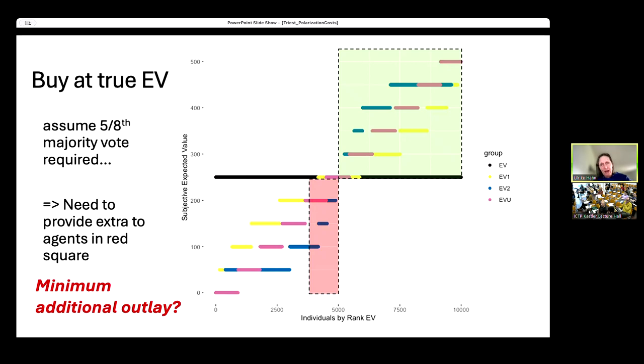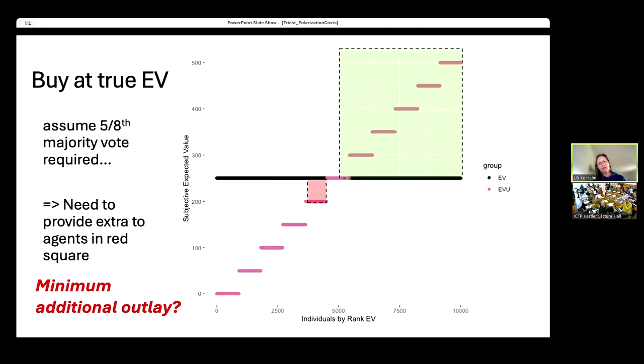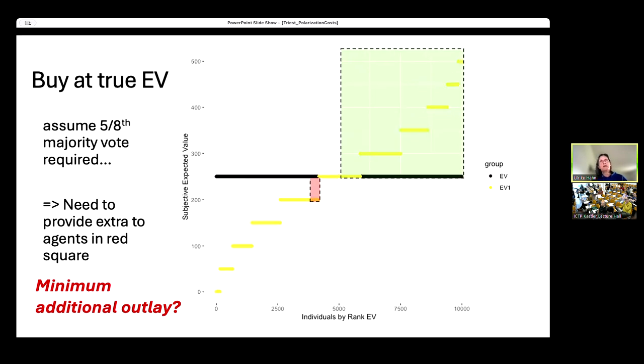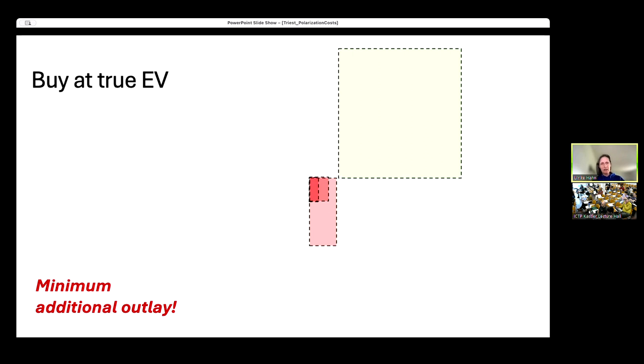Just going to call that extra bit the minimum additional outlay. This is what we have to fork out for the uniform distribution. This is what we have to add for the normal distribution. And this is what we have to add as a minimum additional outlay to get people on board for the bimodal distribution. We can see immediately that this minimum additional outlay is going to be largest for the bimodal.